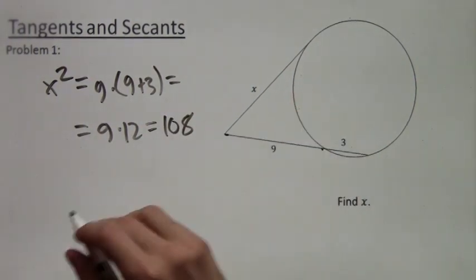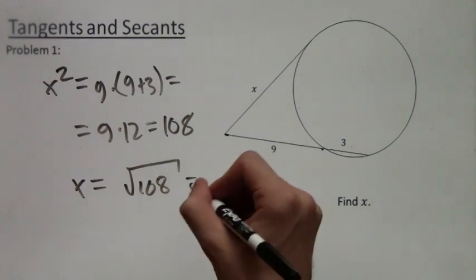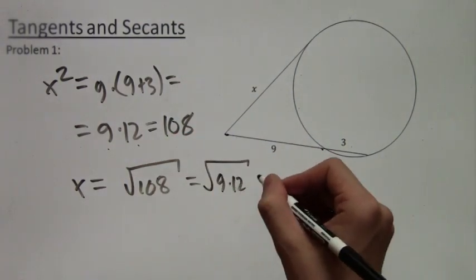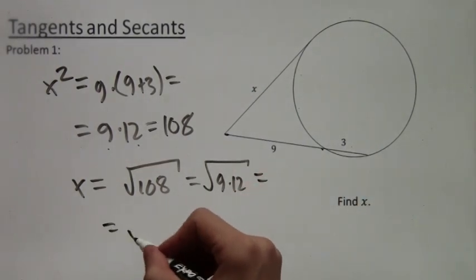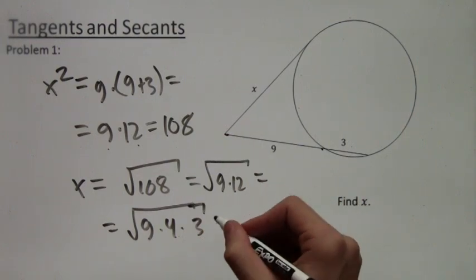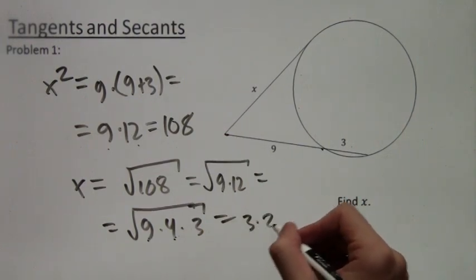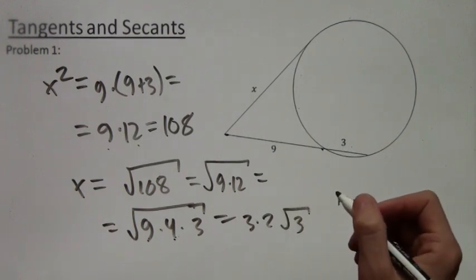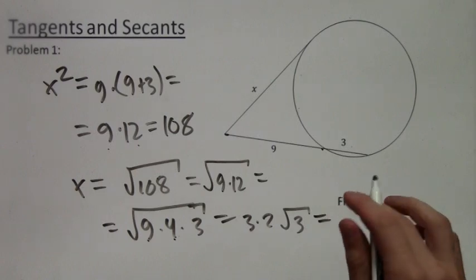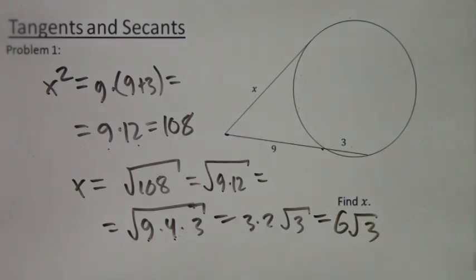And to find x, we need to actually take the square root of that, so the square root of 108, and to simplify that, we're actually going to need to factor it back. So I rewrite it as 9 times 12, and then we have square root of 9 times 4 times 3. 9 and 4 are perfect squares of 3 and 2, so we can pull them out 3 times 2 times root 3. And this simplifies to 6 root 3. So x equals 6 root 3 is the answer.